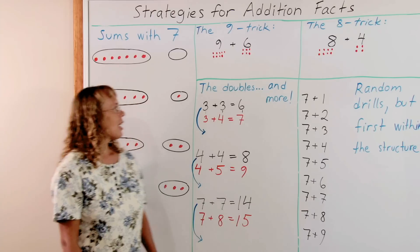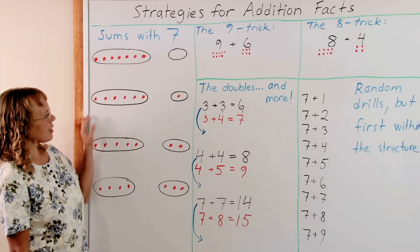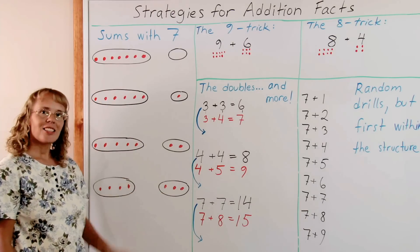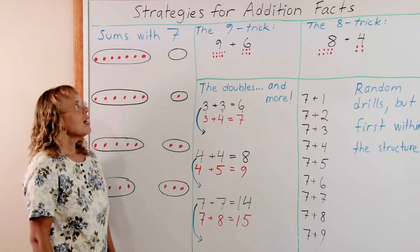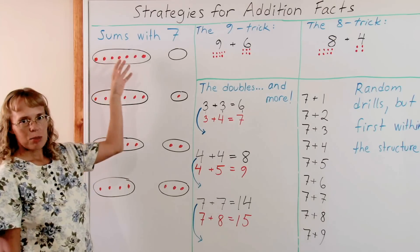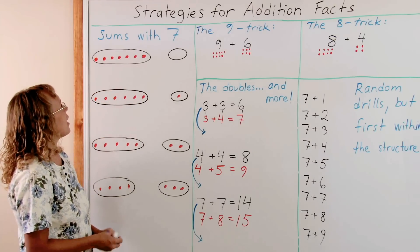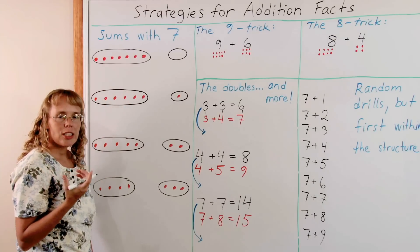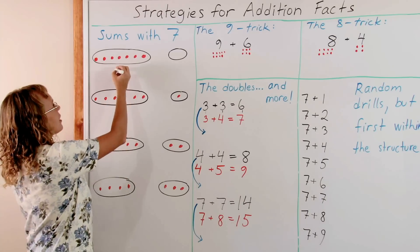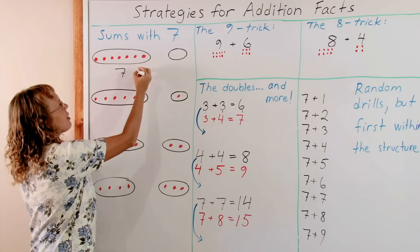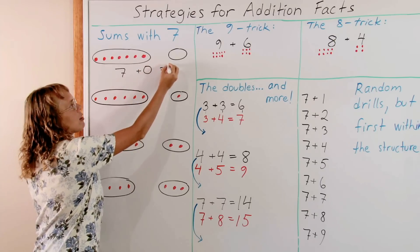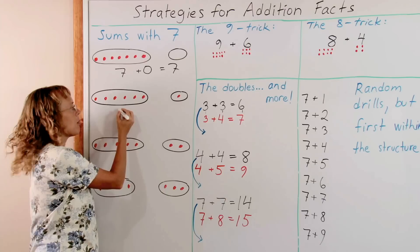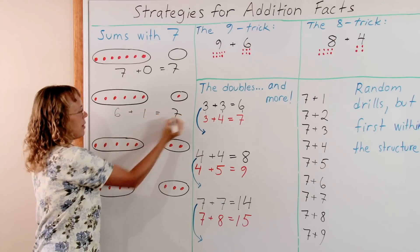We will start with this very nice exercise. Here I drew it for sums with 7, and basically I have grouped 7 balls in different ways. Here are 7 in this group, 0 in that group. Total is 7. Here are 6 in one group, 1 in the other, total 7.